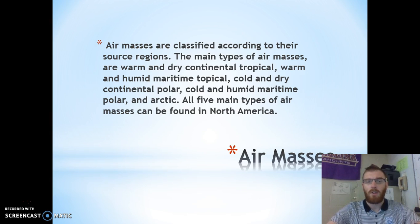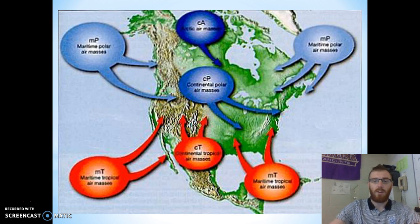So if you put those together, you can identify any of these five major types of air masses that all occur in North America. And you can see those here based on where they occur.